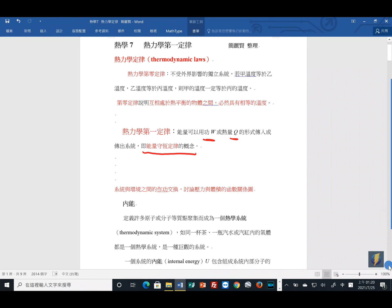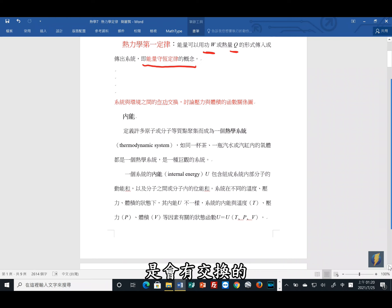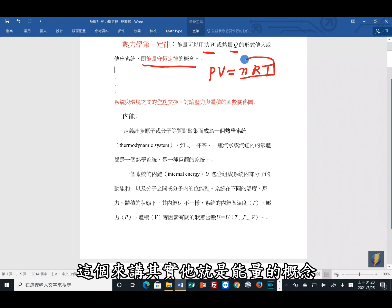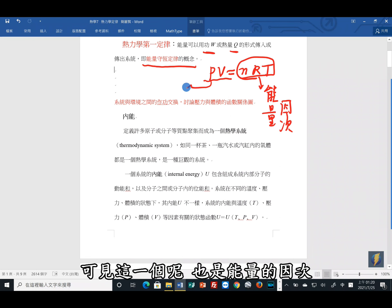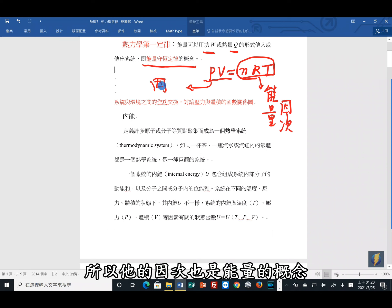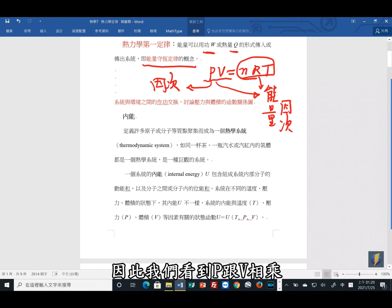我们来看底下的内容。系统跟外界的环境,它们之间的做功是会有交换的。上次特别跟各位提到的,我们的PV等于NRT,其实它就是能量的概念,它的因次是跟能量有关。因此我们看到P跟V相乘,你就可以了解它的单位其实就是能量。